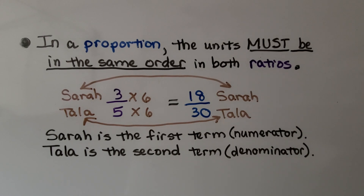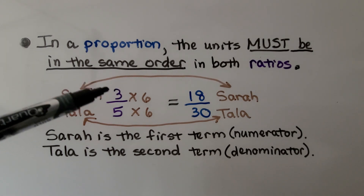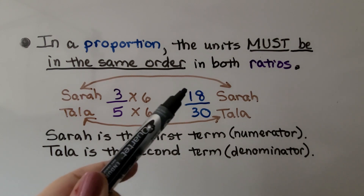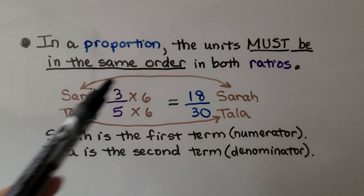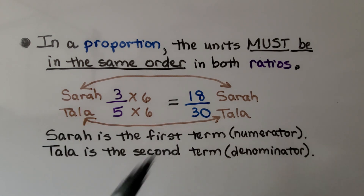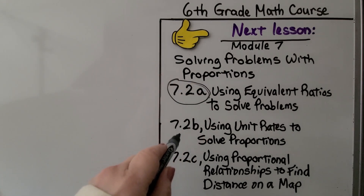In a proportion, the units must be in the same order in both ratios. If Sarah is the first term — the numerator, if we look at this as a fraction — then Sarah has to be the first term for our equivalent ratio. And if Tala is the second term, then she needs to be the second term in the equivalent ratio as well. We're finished with the first part of the lesson and will move on to the second part: using unit rates to solve proportions.